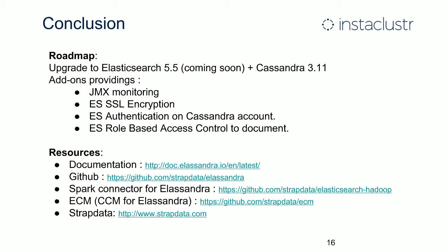As a conclusion, the roadmap for Elassandra is to upgrade in the next release to Elasticsearch 5.5, the latest production release. Development and testing are ongoing, and it will benefit from all improvements in Elasticsearch 5. StrapData is also building add-ons to monitor Elassandra through the JMX interface, similar to Cassandra JMX metrics. We will also provide Elasticsearch security with encryption, authentication, role-based access control, and content-based access control based on Cassandra roles and permissions, providing well-integrated security based on Cassandra configuration.